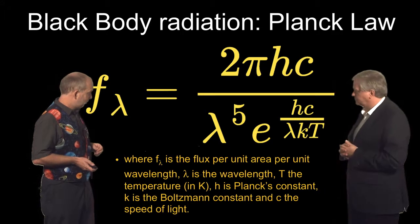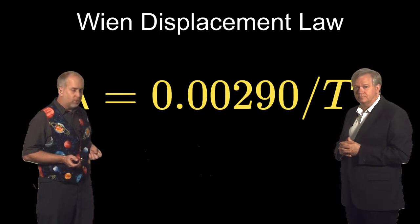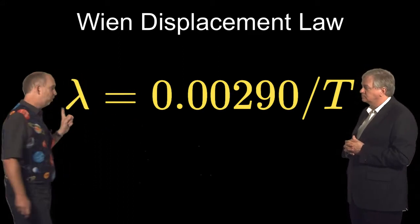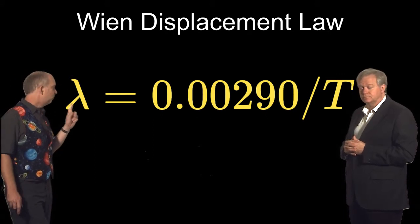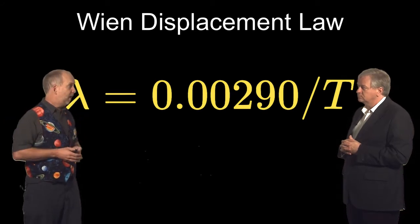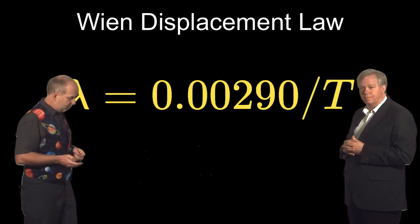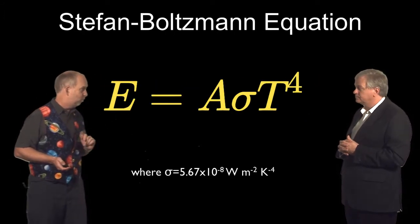So you can write down an equation for this. We'll show you this in the reference notes. It's a fairly complicated equation. You can take two simple derivatives of that equation. One of them is to work out what wavelength things peak at. This is called the Wien displacement law. So what this means is, if you have a particular temperature, you can work out what wavelength the black body curve should peak. Or go the other way around. If you know what wavelength it's peaking at, you can work out what the temperature is.